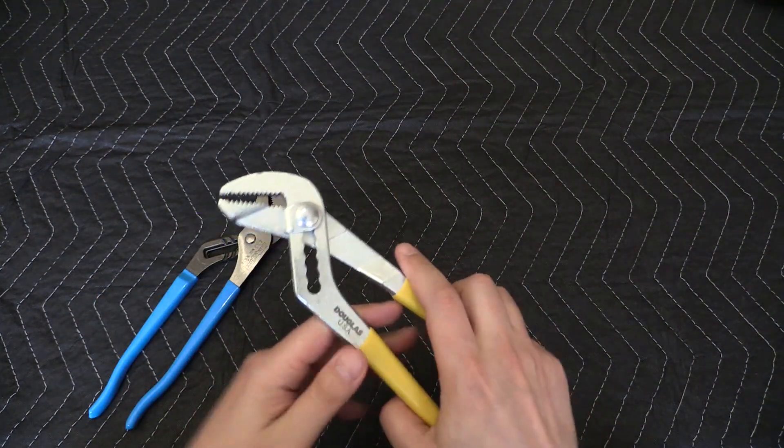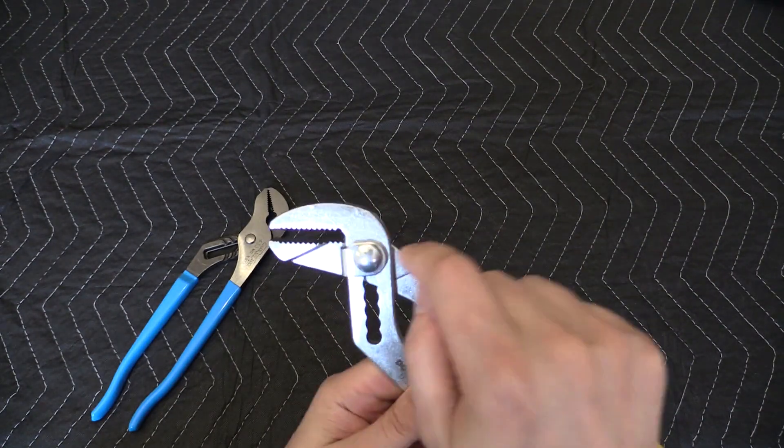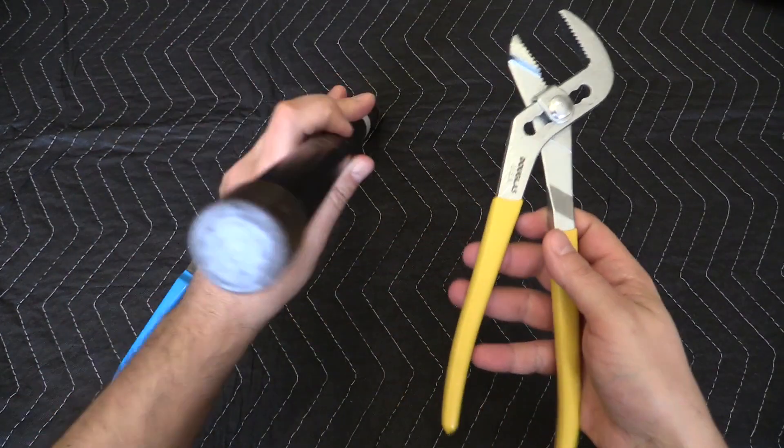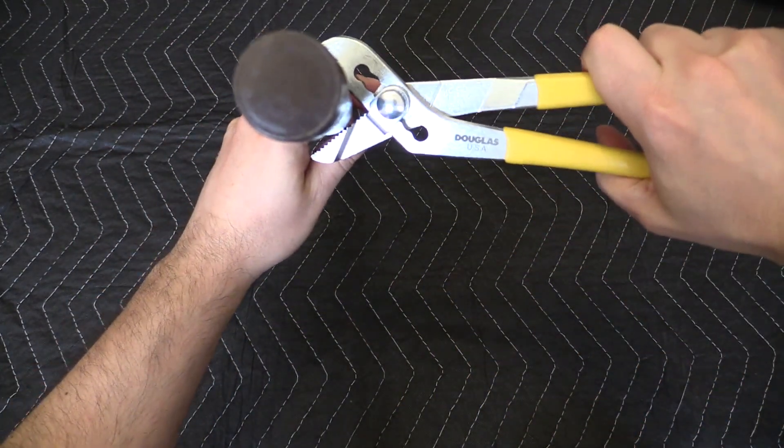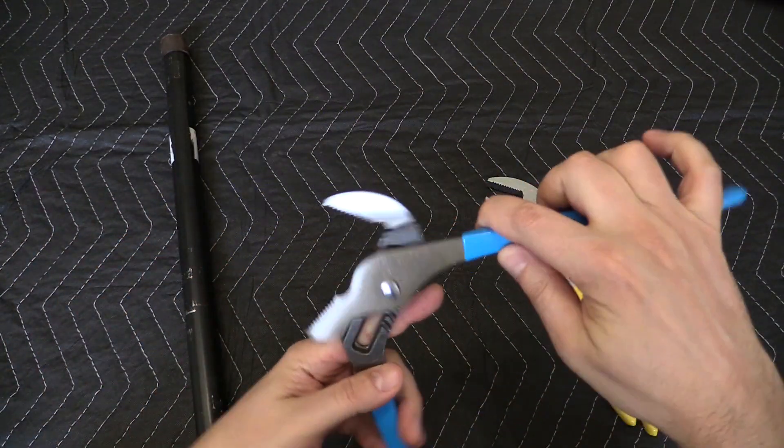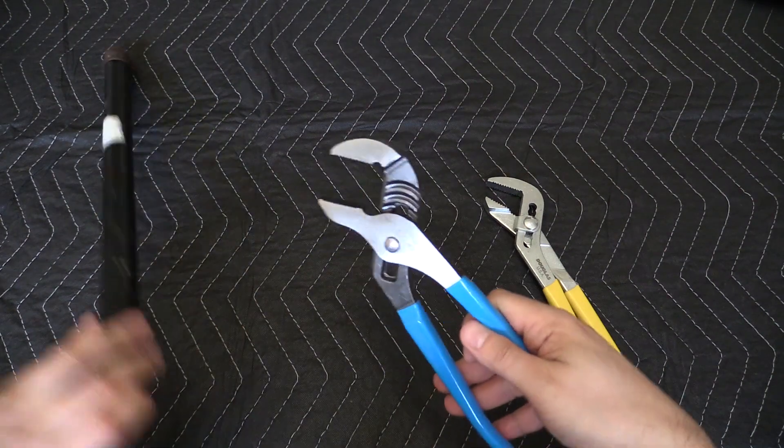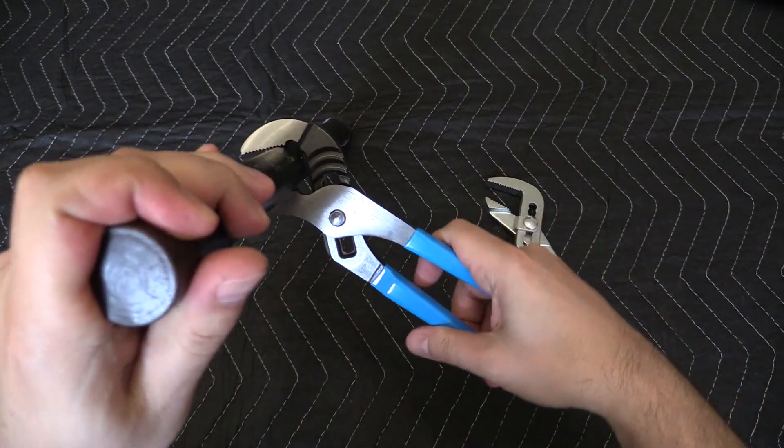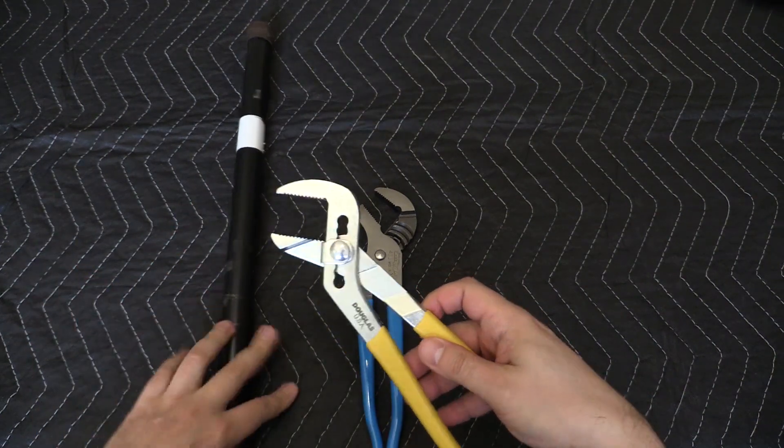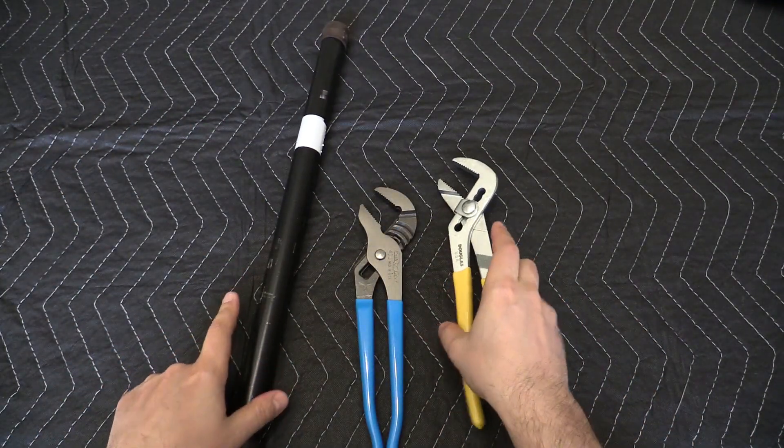Now another thing I forgot to mention is the teeth on the Douglas pliers. The top row is pointing back, the bottom row is pointing forward, so they're meant to grab and pull with the best grip in this direction. Whereas with the channel locks they have a symmetrical grind on the teeth so these should be equally as effective in twisting either way. In theory the Douglas should bite a little bit better due to the teeth direction, but in practice I haven't found it to be a difference.